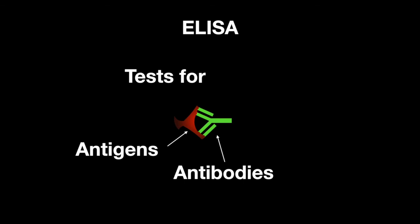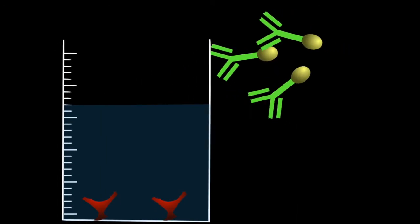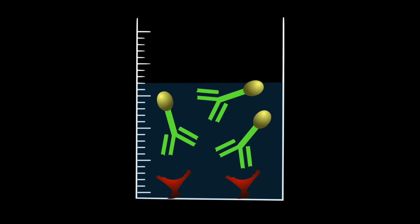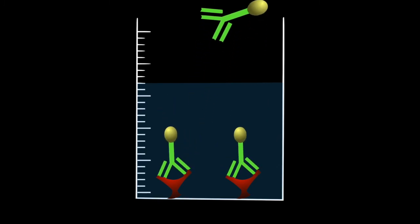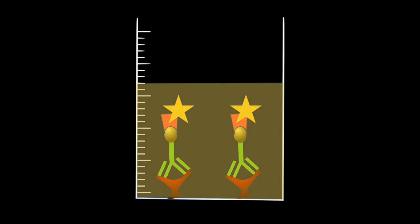ELISA is an enzyme-linked immunosorbent assay which tests for the presence of a specific antigen or antibody. An antibody specific to the target species is linked to an enzyme, then added to the sample. If the target exists, the antibody binds. The free antibody is washed away. Then a substrate is added that reacts to any existing enzyme to produce a fluorescence.